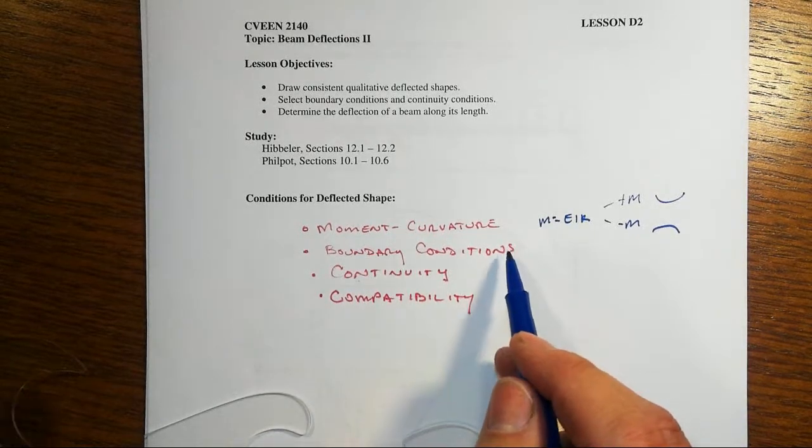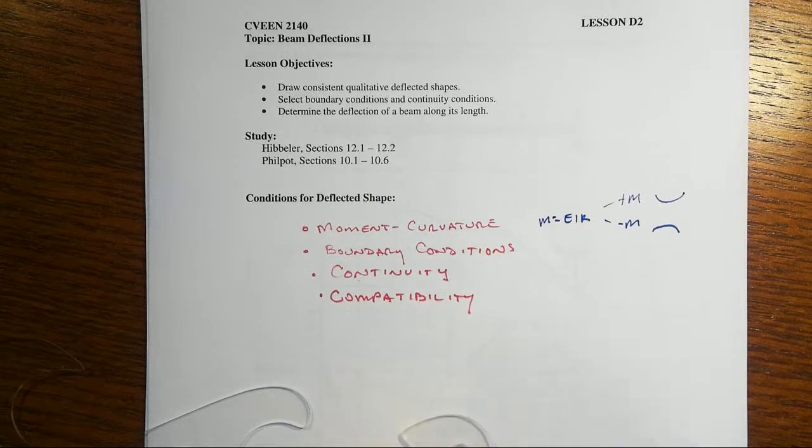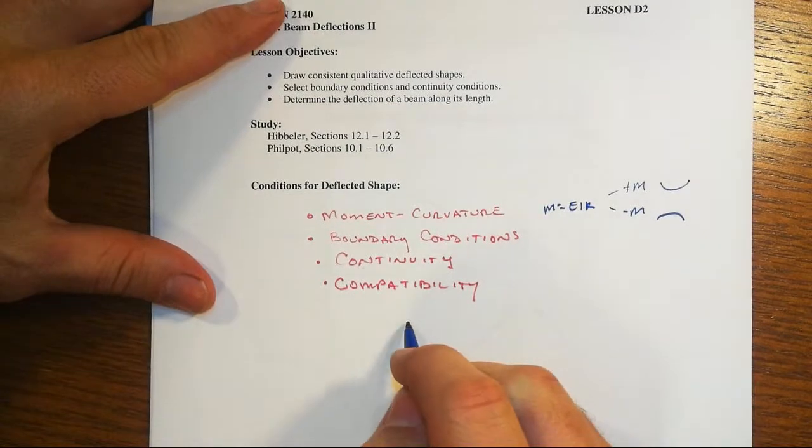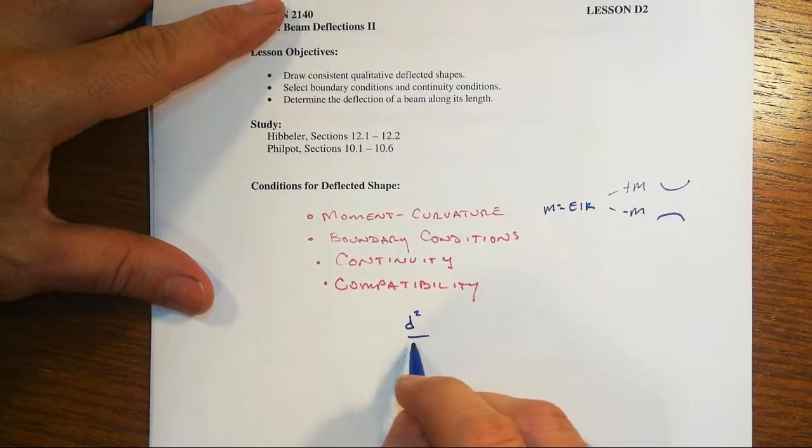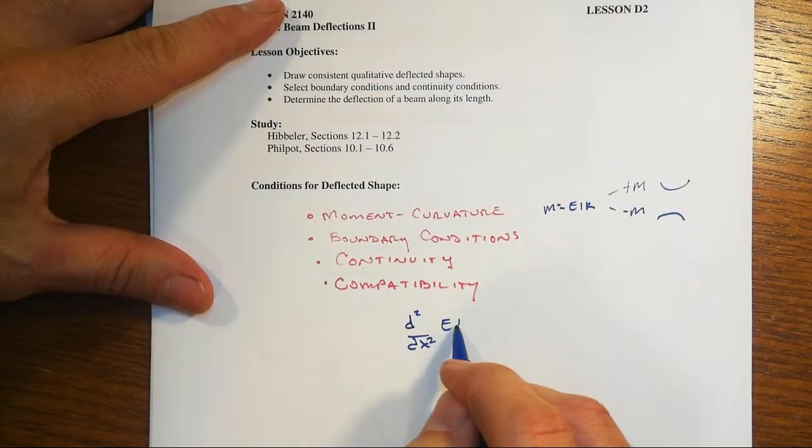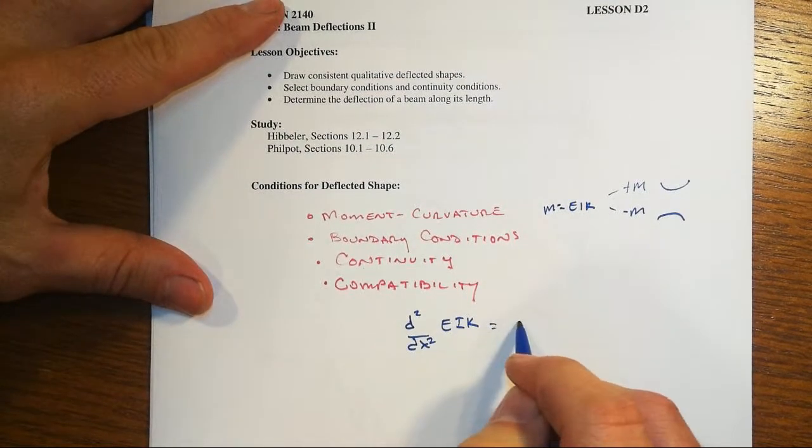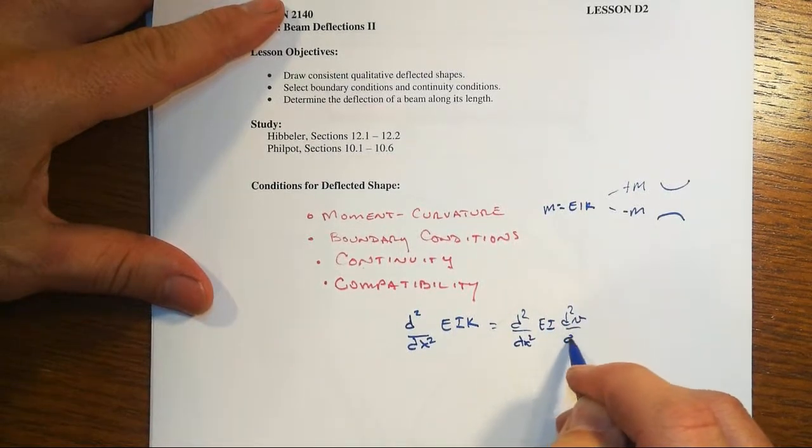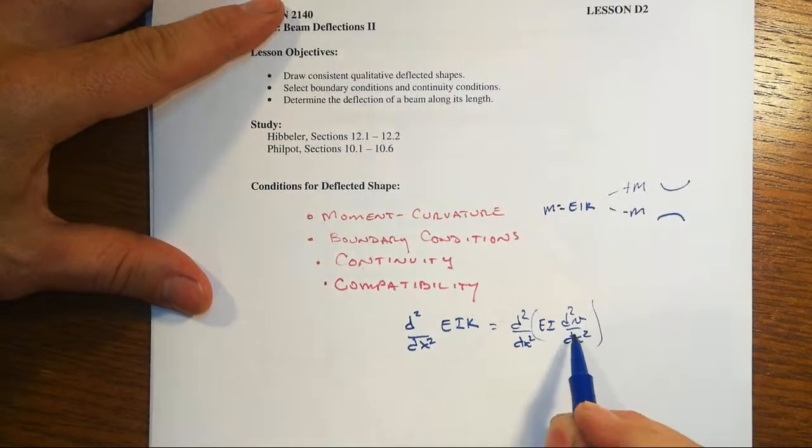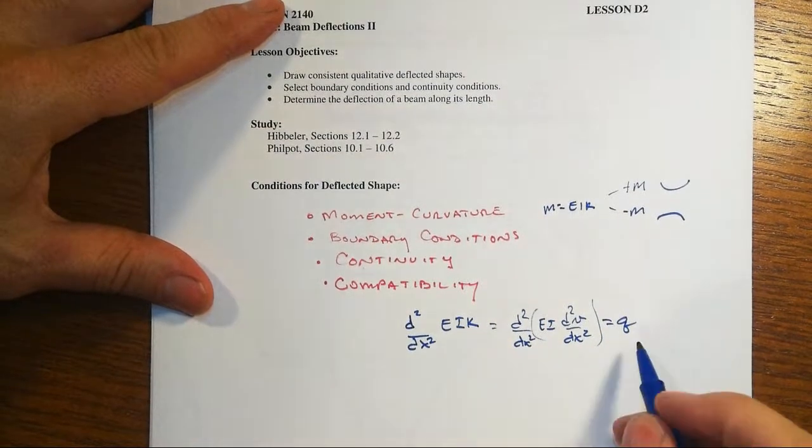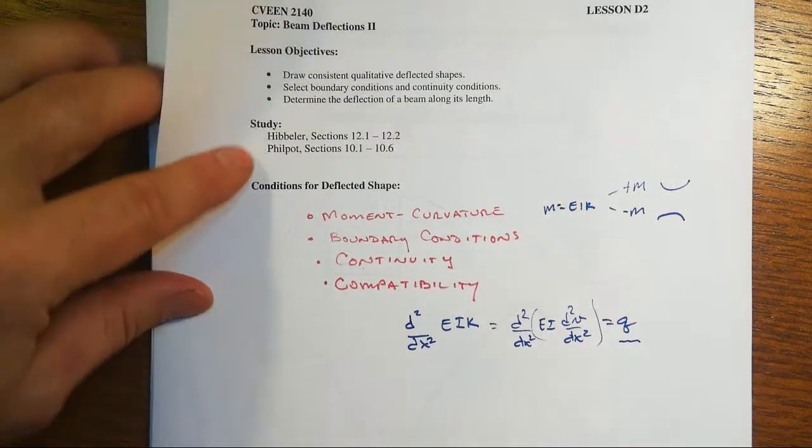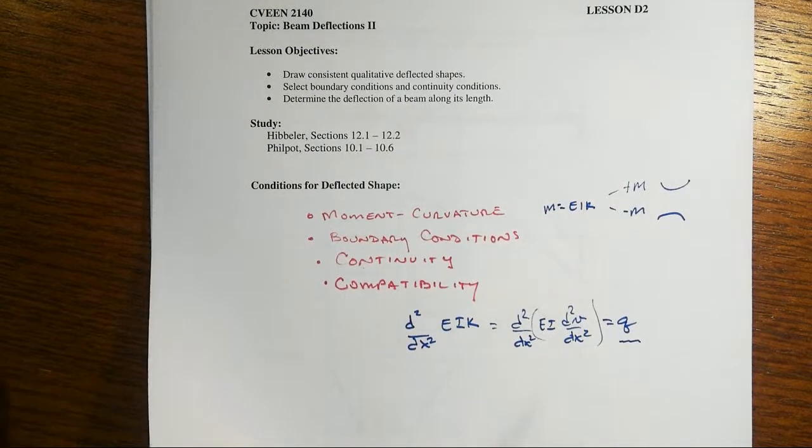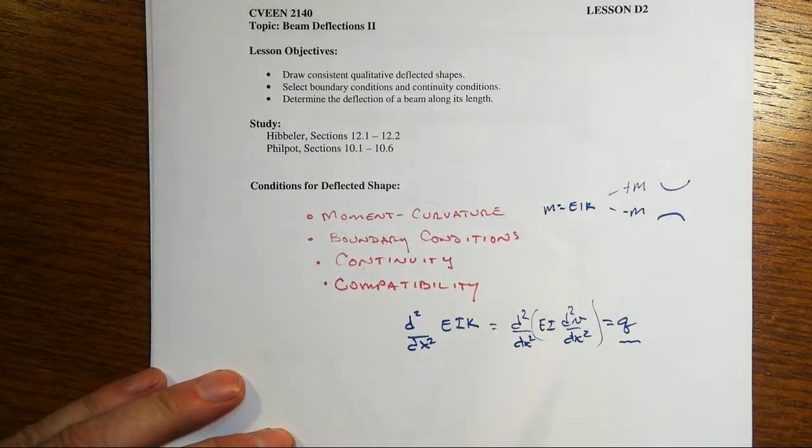Right, boundary conditions need to be met as well as continuity compatibility. Keep in mind, of course, that our overall model is that the second derivative of the curvature, EI kappa, which is second derivative of EI times, there we go, there's our curvature there, is equal to the distributed load. Now, if this function gets to be very difficult, then everything else here also gets to be difficult.